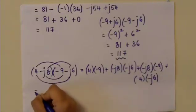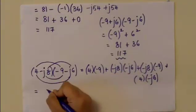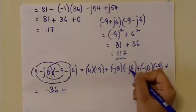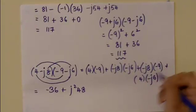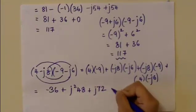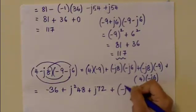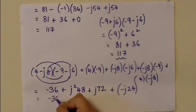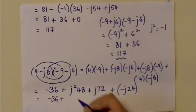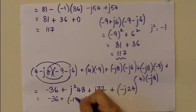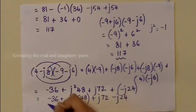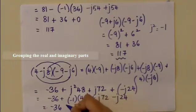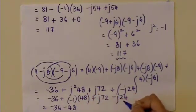Simplifying: 4 times (-9) is -36; (-j8) times (-j6) gives j²(48); then 4 times (-j6) gives -j24; and (-j8) times (-9) gives +j72. Since j² = -1, substituting: -36 + (-1)(48) + j72 - j24 = -36 - 48 + j(72 - 24) = -84 + j48.